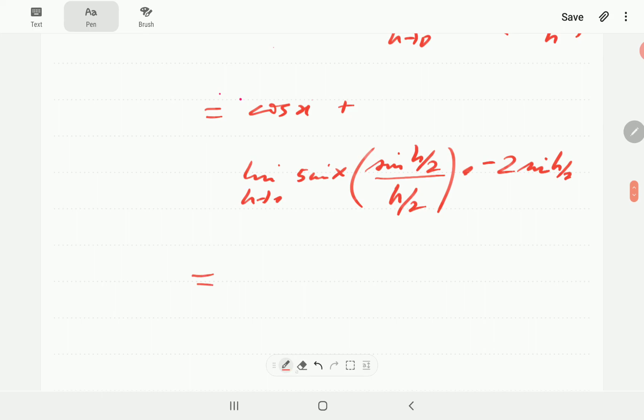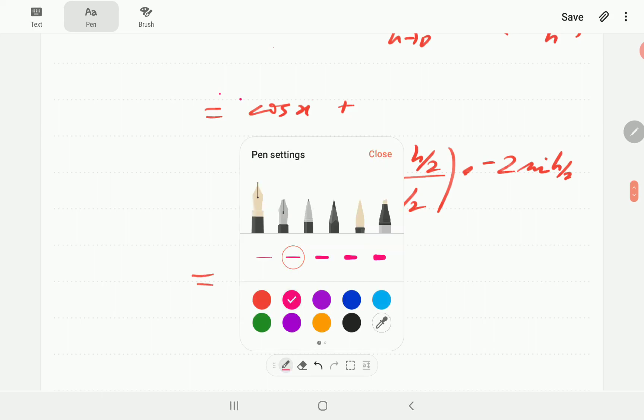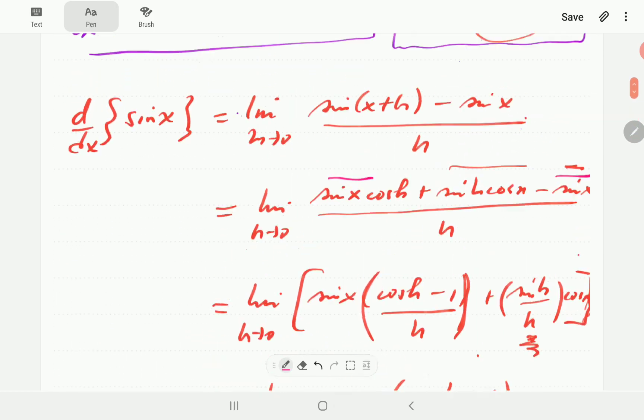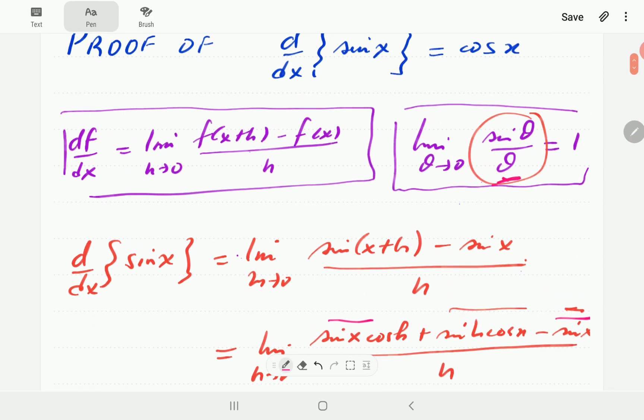Okay, so to round this off now, as h goes to 0, this term remains sine x, because it doesn't depend on h. This one goes to 1, because it's the same form as this.